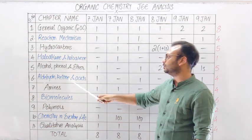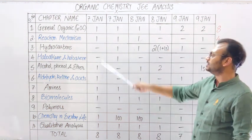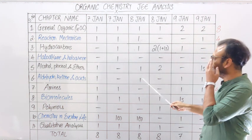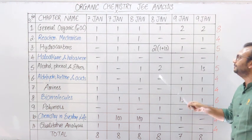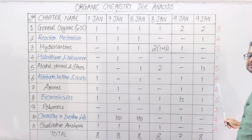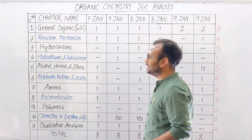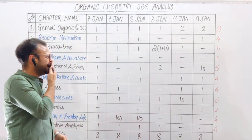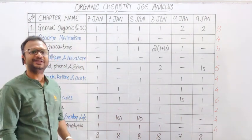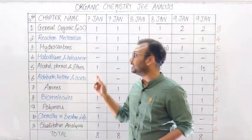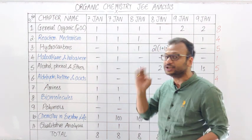Next आता है Aldehyde, Ketones और Carboxylic Acids। 7th January Morning Shift में 1 question, Evening Shift में कोई नहीं, 8th January Morning Shift में 1 question, Evening Shift में कोई नहीं, 9th January Morning Shift में 1 question, Evening Shift में भी 1 question। Total 6 papers में 4 questions। यानि Aldehyde और Ketones को आप Reaction Mechanism से compare कर सकते हो — उतनी ही important है। पर कोई भी chapter ऐसा नहीं है जिसकी weightage GOC जितनी हो।